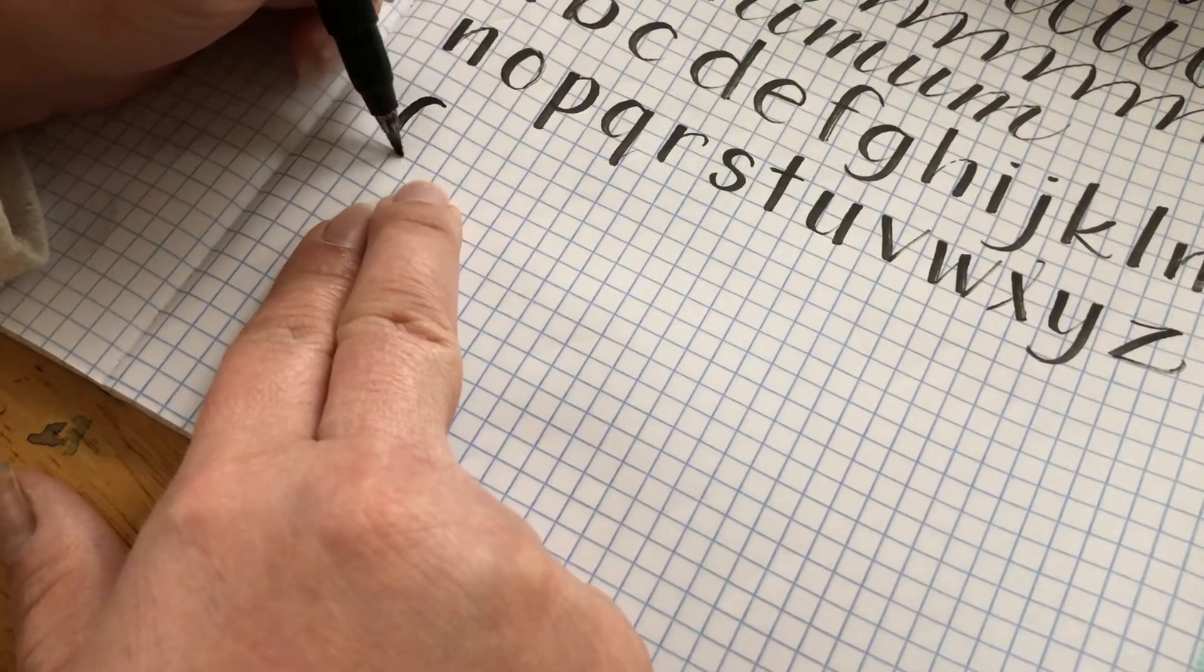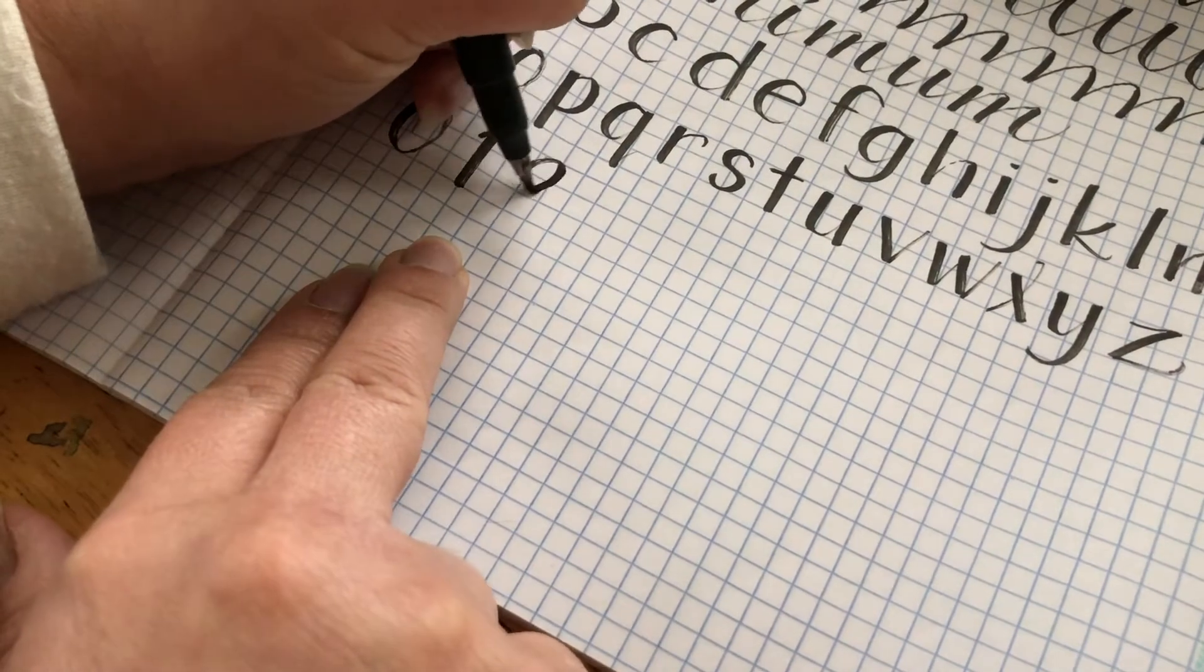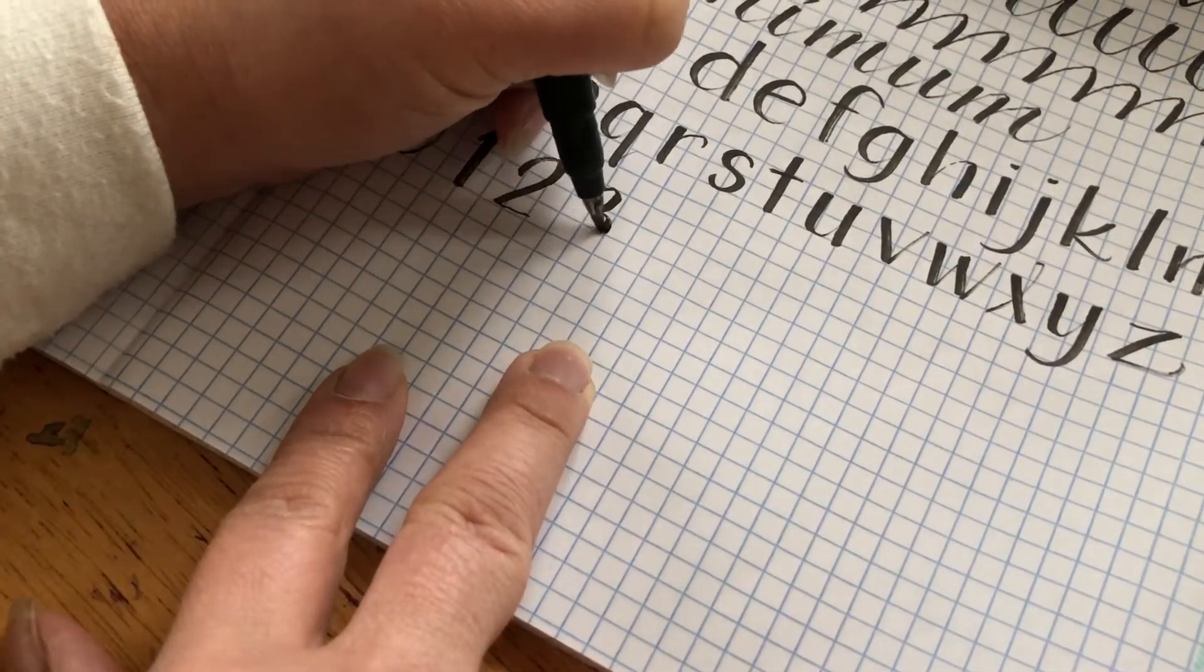Don't forget to practice numbers using this same pressure varying technique. Heavy down strokes, light up strokes.